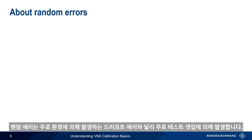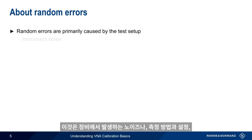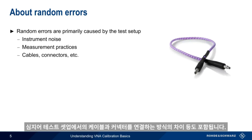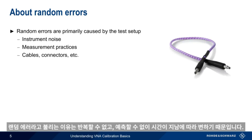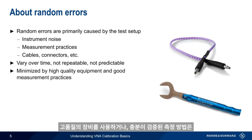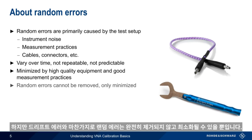not remove it completely. As opposed to drift errors, which are mostly caused by the environment, random errors are primarily caused by the test setup. This includes things like the noise from the instrument, measurement practices and settings, and even differences in the way that cables and connectors are attached to the test setup. The reason these are called random errors is that they vary over time in a non-repeatable, unpredictable way. High quality components and good measurement practices can help to minimize random errors, but just like drift errors, random errors can only be minimized, not removed completely.